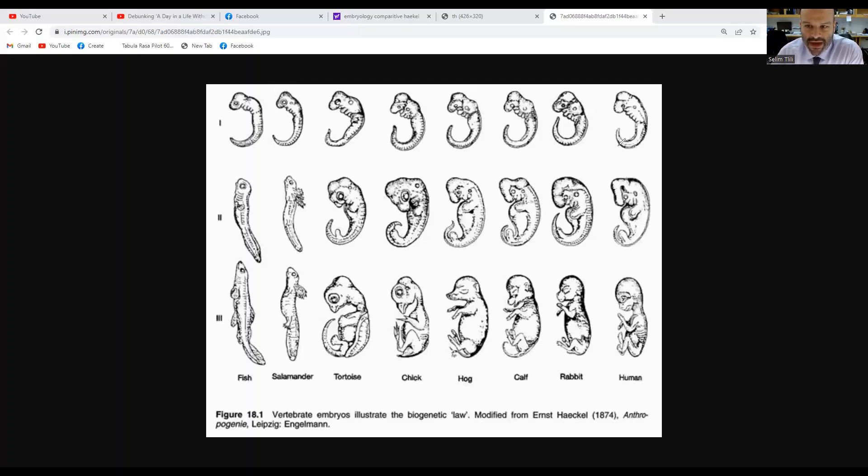As we can see from these images, the similarities that we see in the first stages of embryological development suggest common ancestry—that at some point all of these organisms had shared a common ancestor.